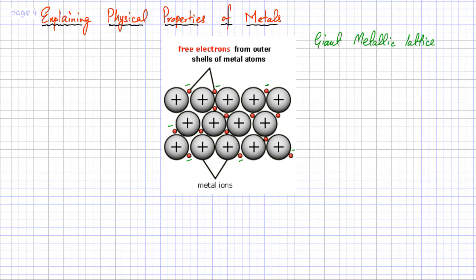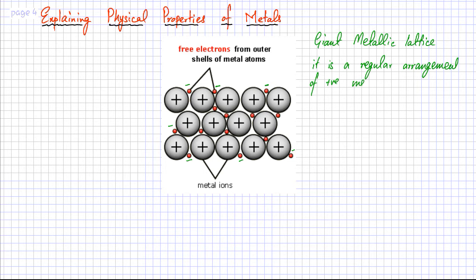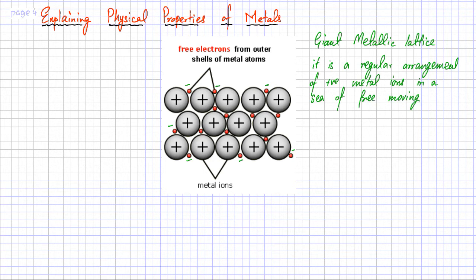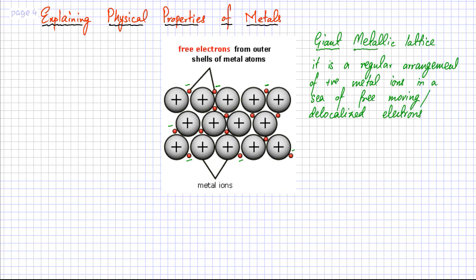That's what a giant metallic lattice is and that's what metallic bonding is — a very strong electrostatic force of attraction. The way we describe a giant metallic lattice is that it is a regular arrangement of positive metal ions in a sea of free moving, or delocalized, electrons.